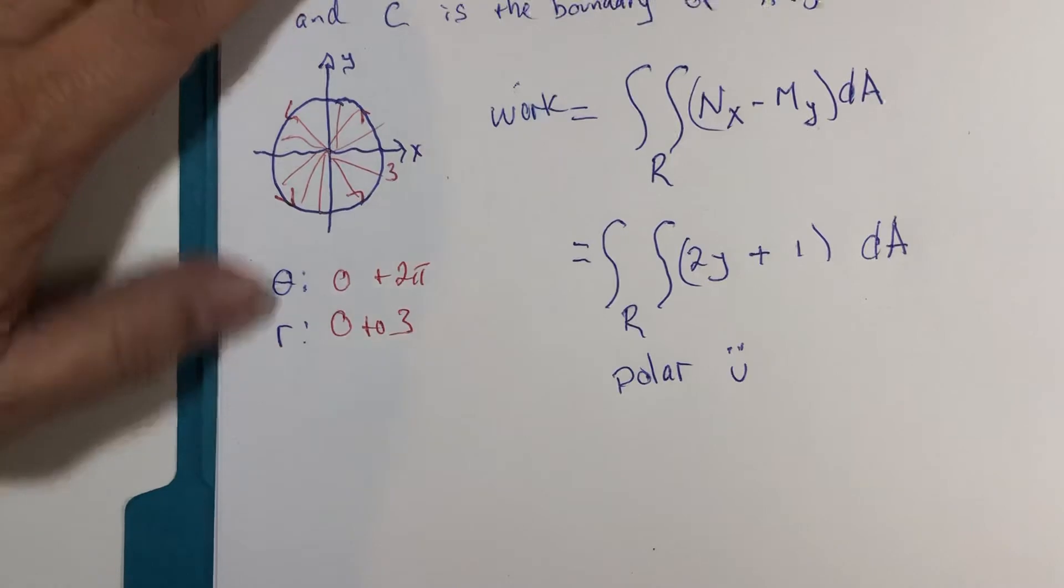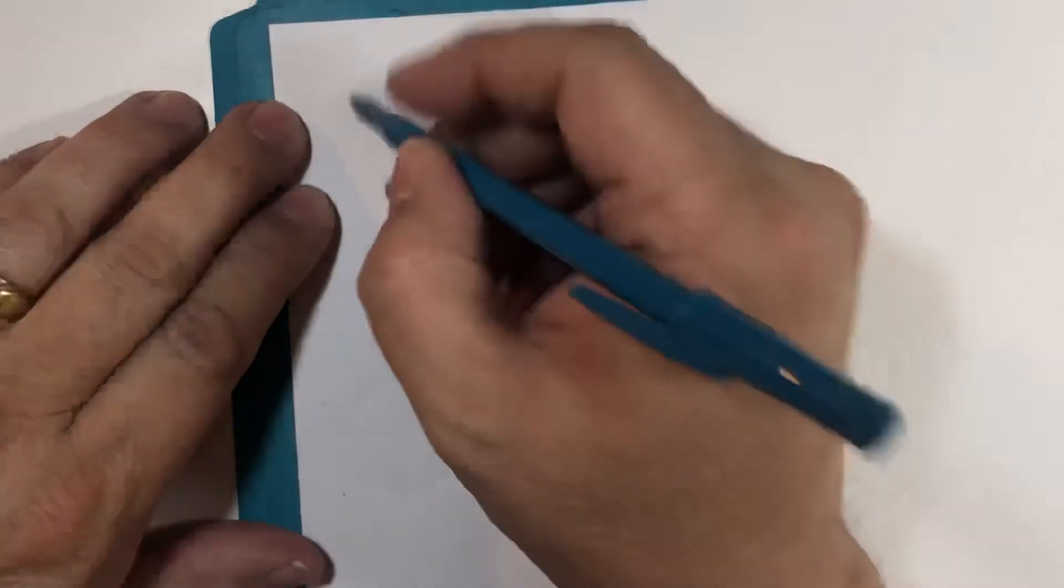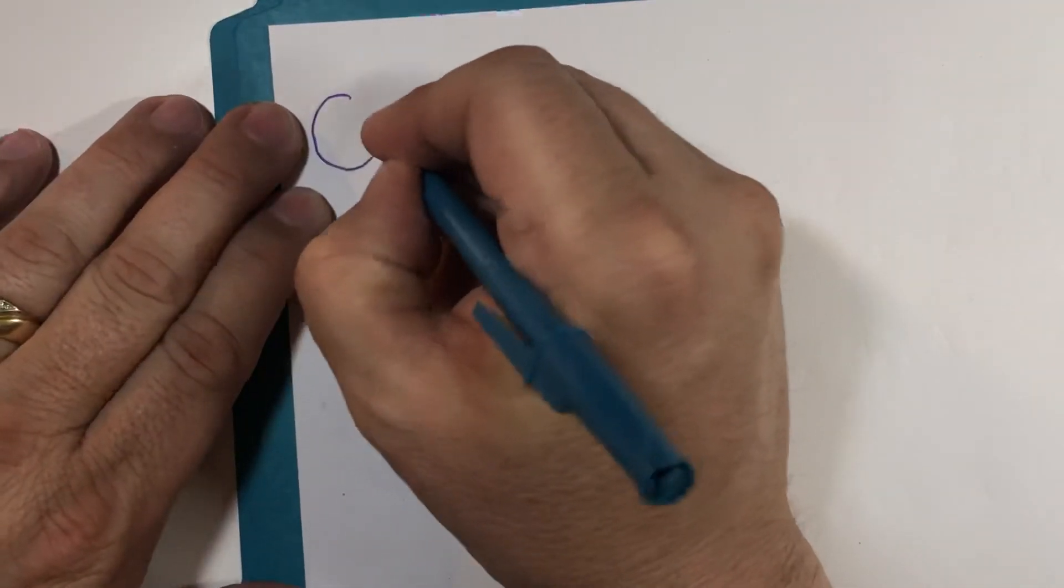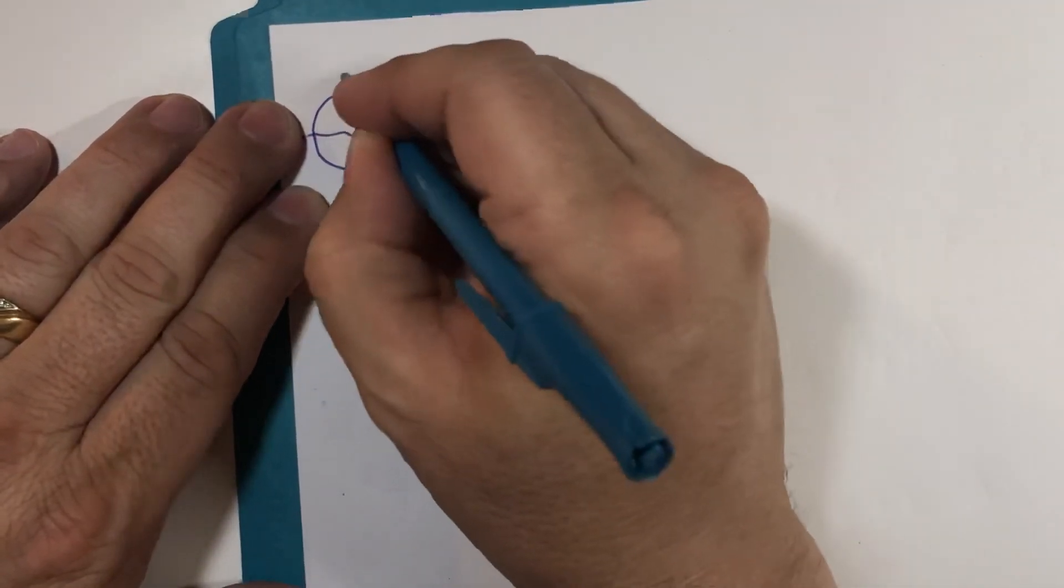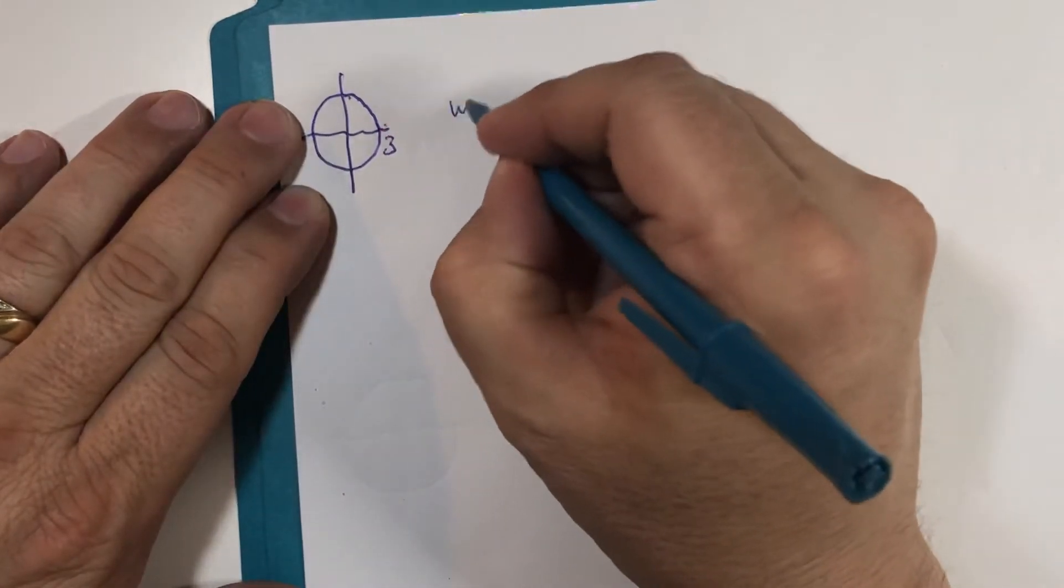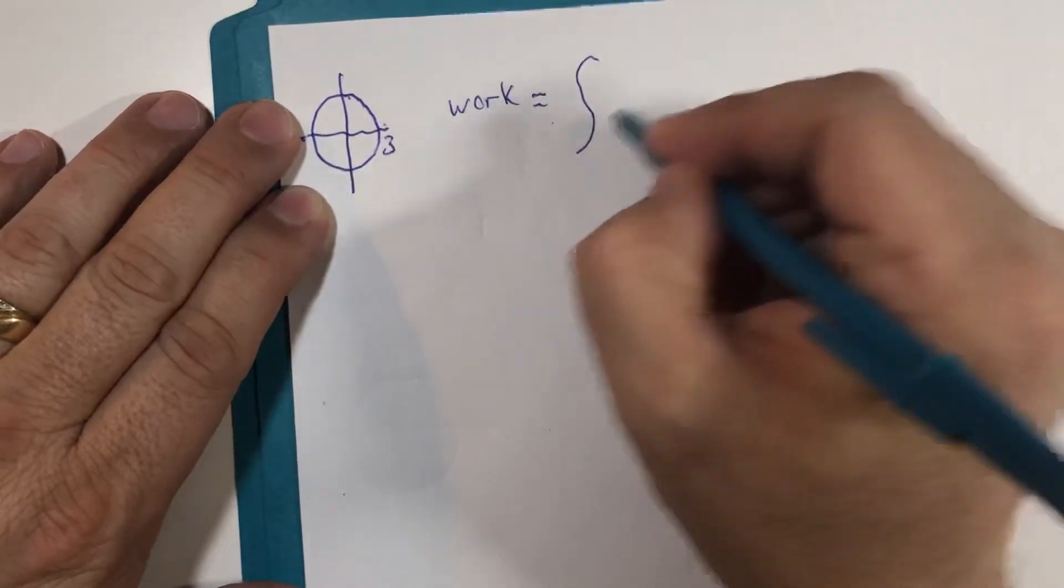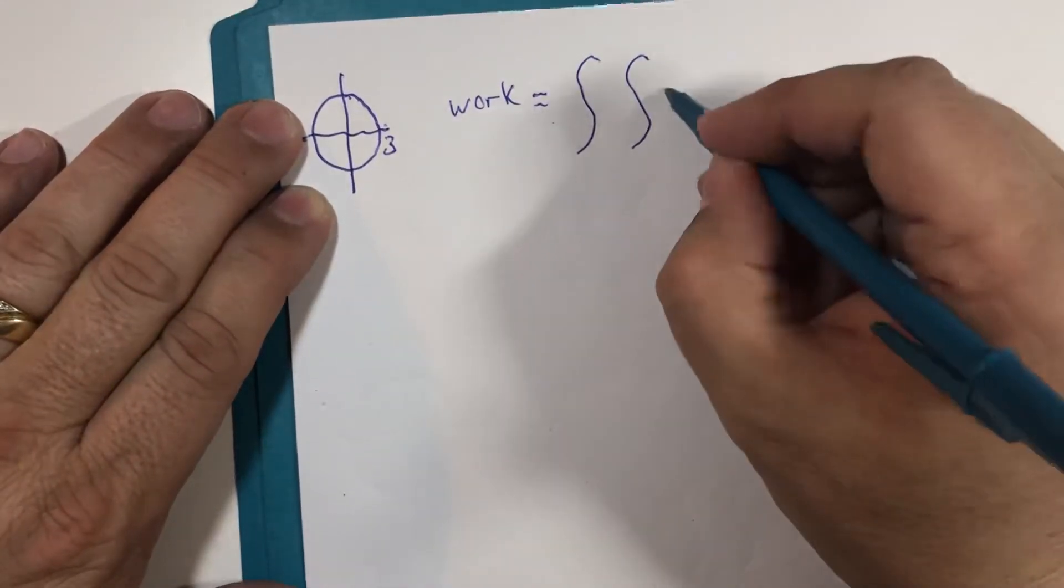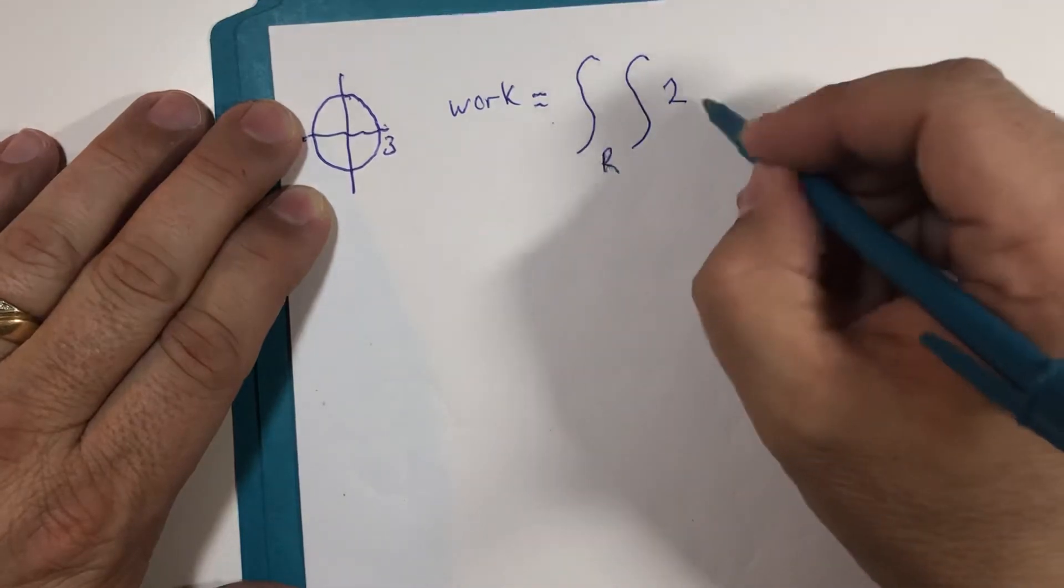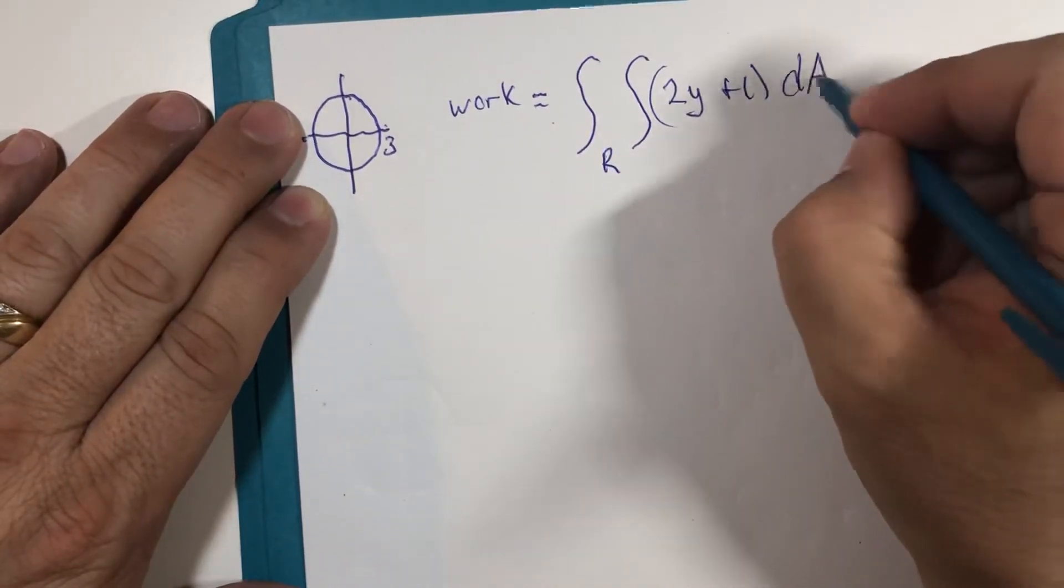So this shouldn't be terrible to set up. I don't know that I have room to evaluate it if I stay here, so I'm going to go to another piece of paper. All right, so I've got here circle of radius 3. And my integral for work is going to be 2y plus 1 dA. Okay, that's what we had.